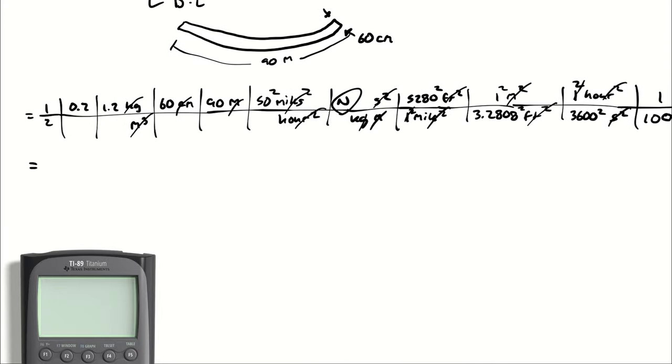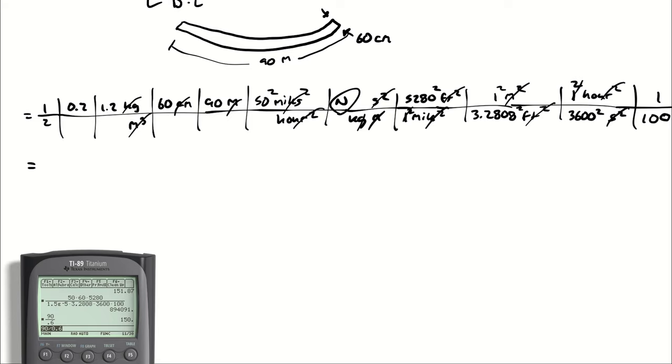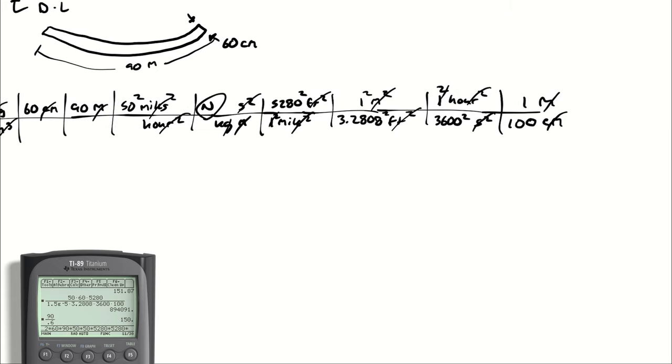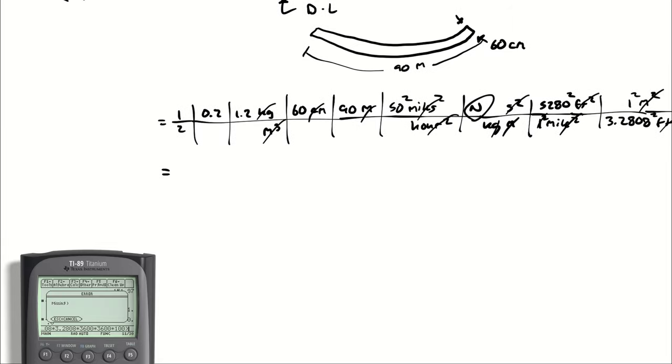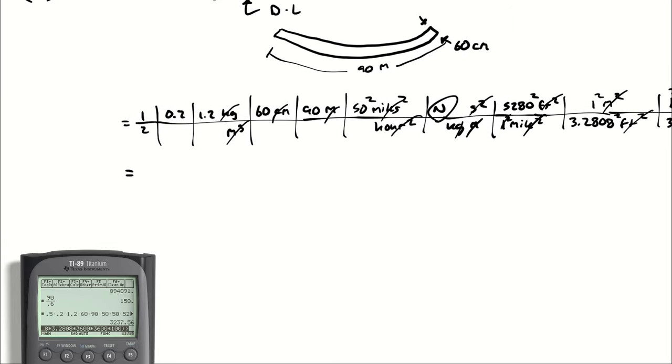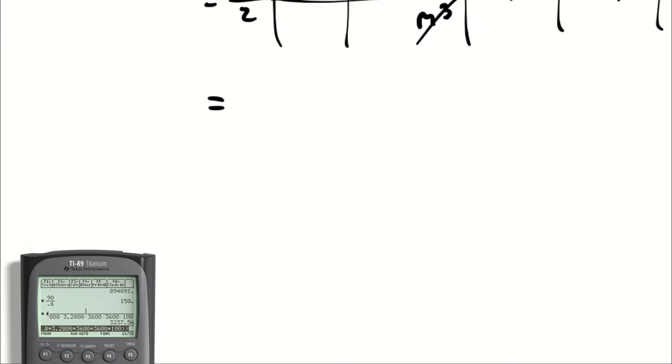So calculator, if you would please. That's 0.5 times 0.2 times 1.2 times 60 times 90 times 50 times 50 times 5,280 times 5,280 times 1 over 3.2808 times 3.2808 times 3,600 times 3,600 times 100. And let's double check that that math looks like it actually carried over correctly, even though I kind of arbitrarily chose some random parentheses. So 3,237.56 newtons.